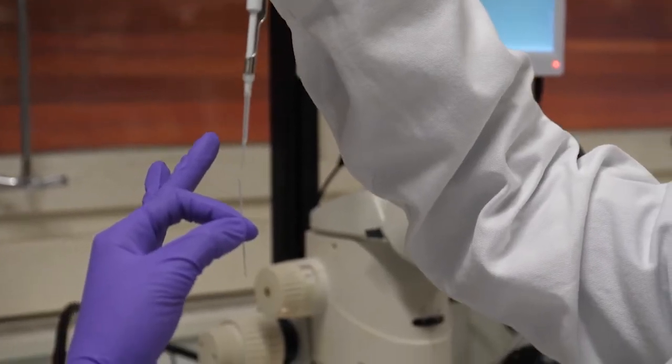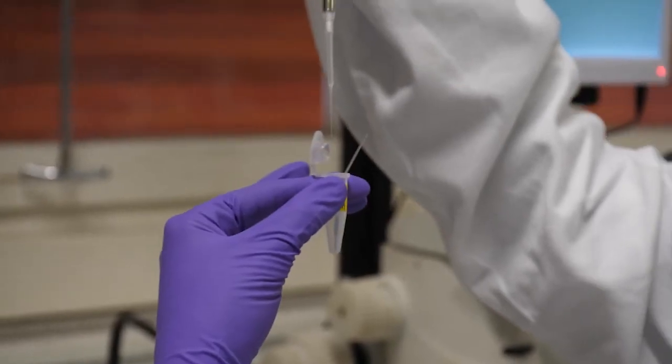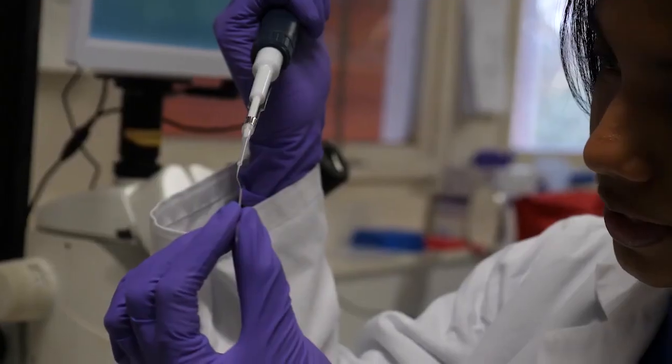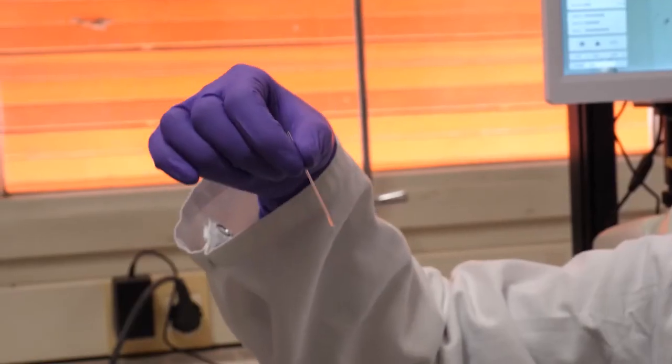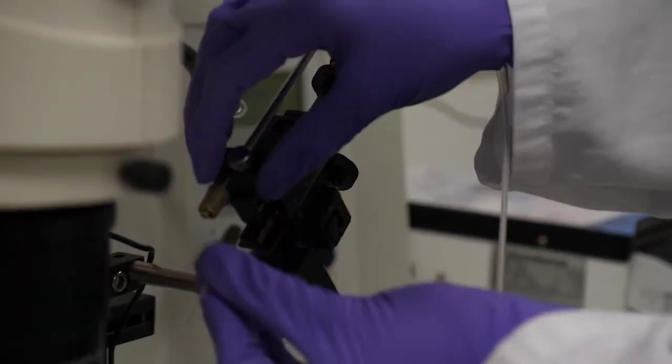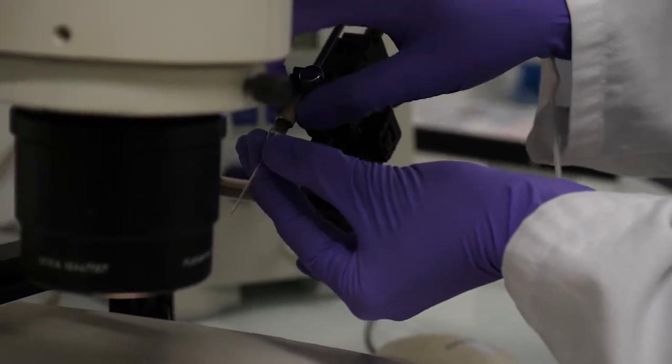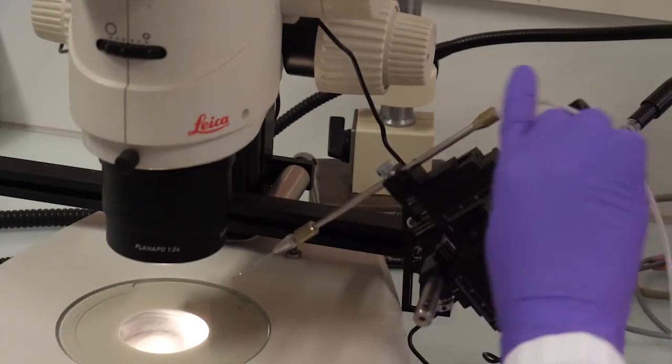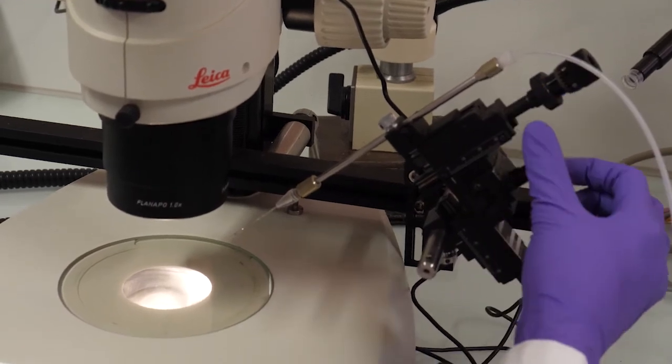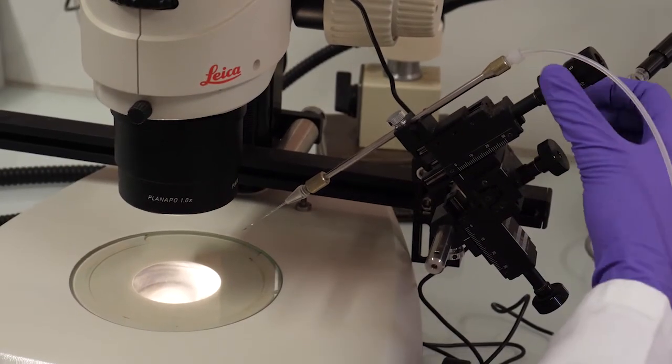An injection capillary is filled up with 3 microliters of H2B-mCherry mRNA using a 20 microliter micro-loader tip, slowly without letting any bubbles in. The needle is then installed into the holder of a microinjector and is positioned at around 30 to 60 degree angle to the embryo to facilitate smooth penetration into the embryo.